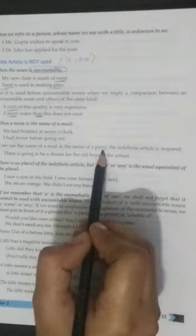A purer water than this does not exist. This is again a comparison. When a noun is the name of a meal: we had breakfast at 7 o'clock. We have not written a here. I had dinner before going out. Again we have not written a here.